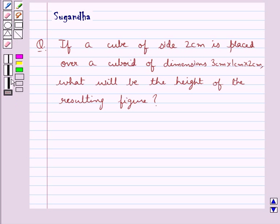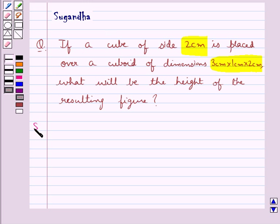Hello and welcome to the session. In this session we discuss the following question: if a cube of side 2 cm is placed over a cuboid of dimensions 3 cm × 1 cm × 2 cm, what will be the height of the resulting figure? Let's proceed with the solution now.